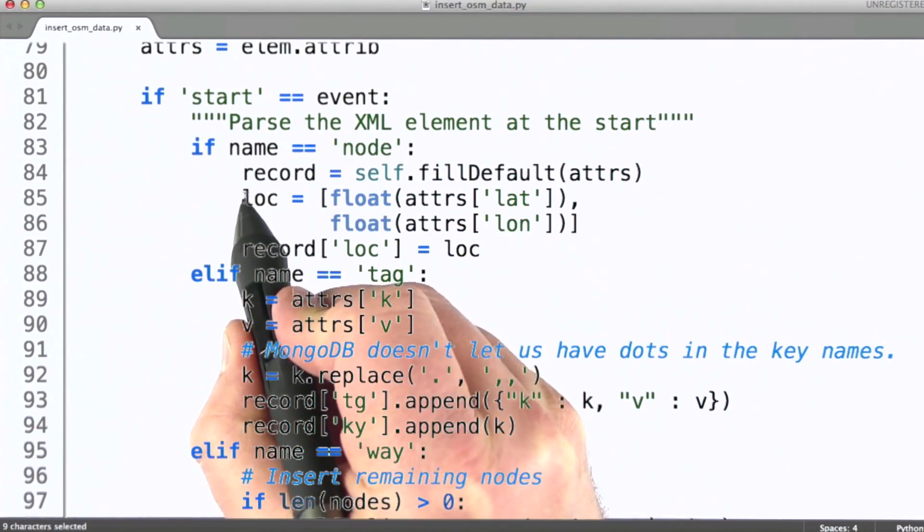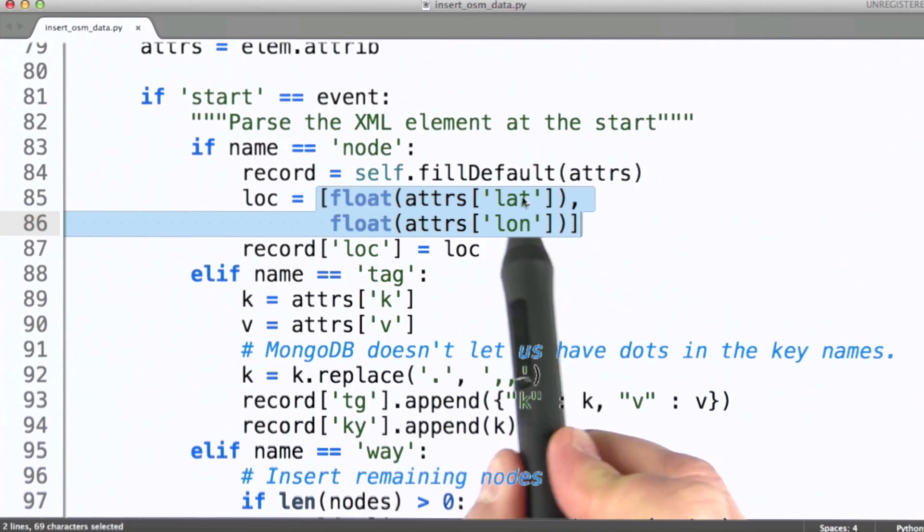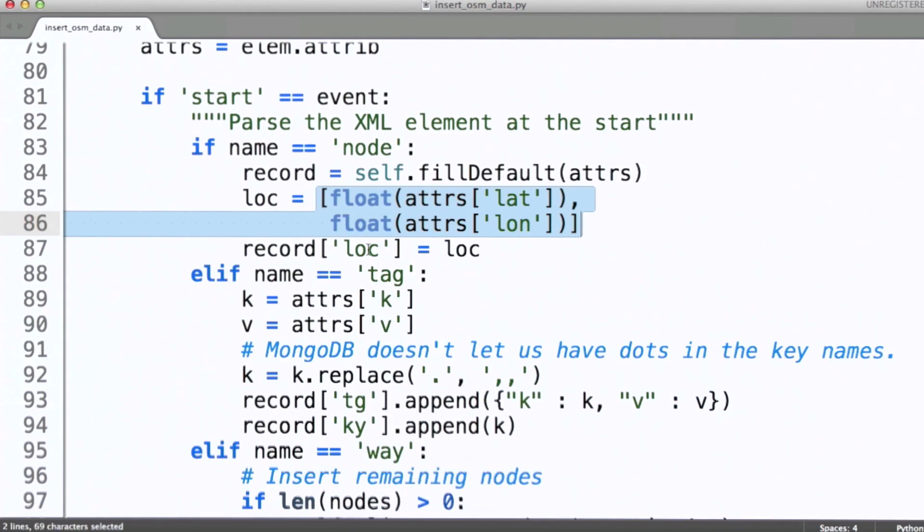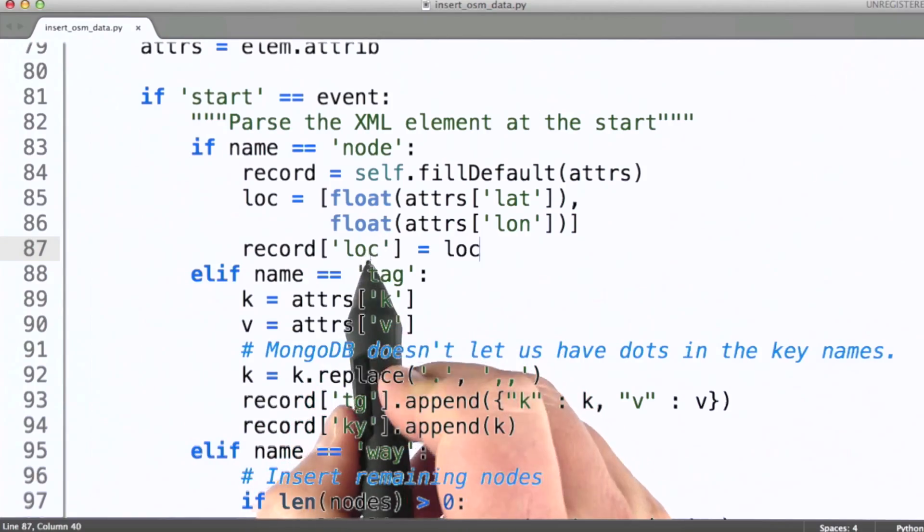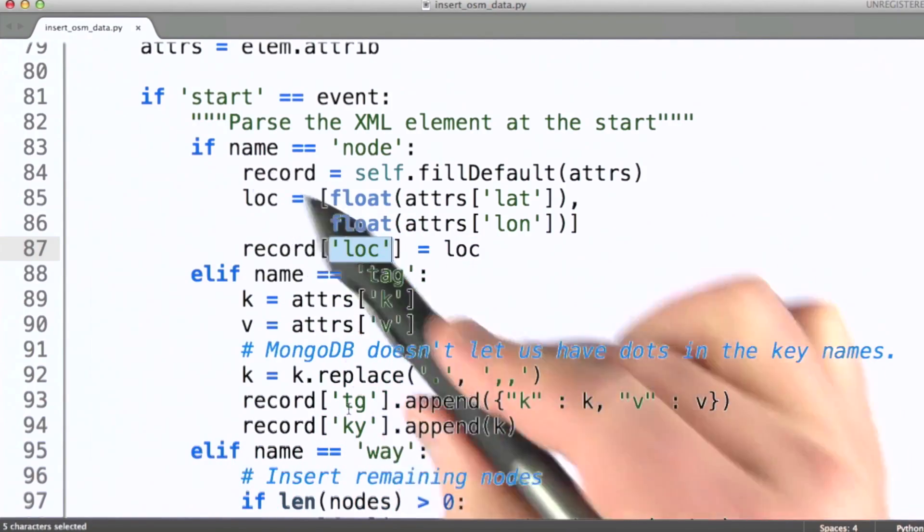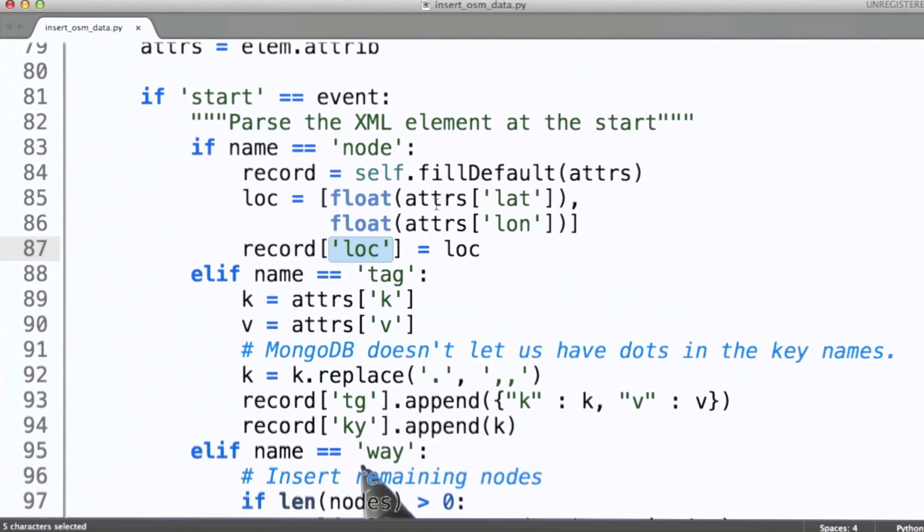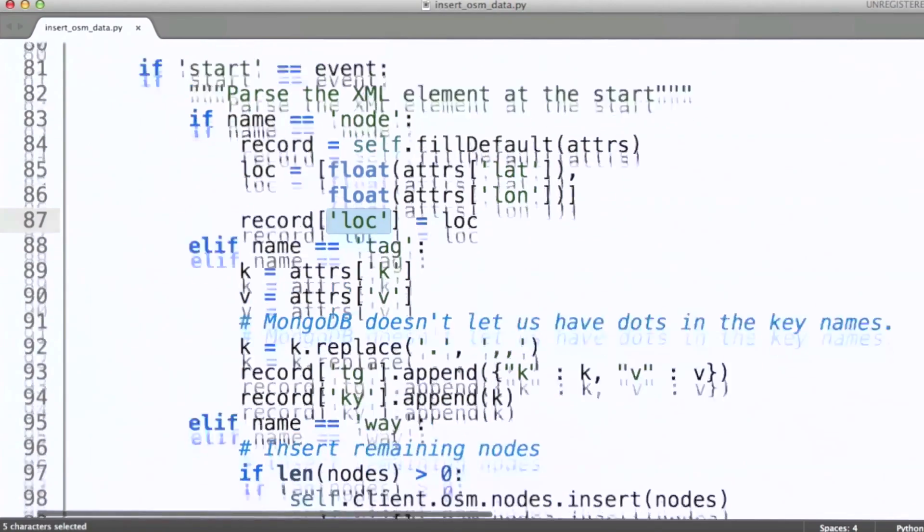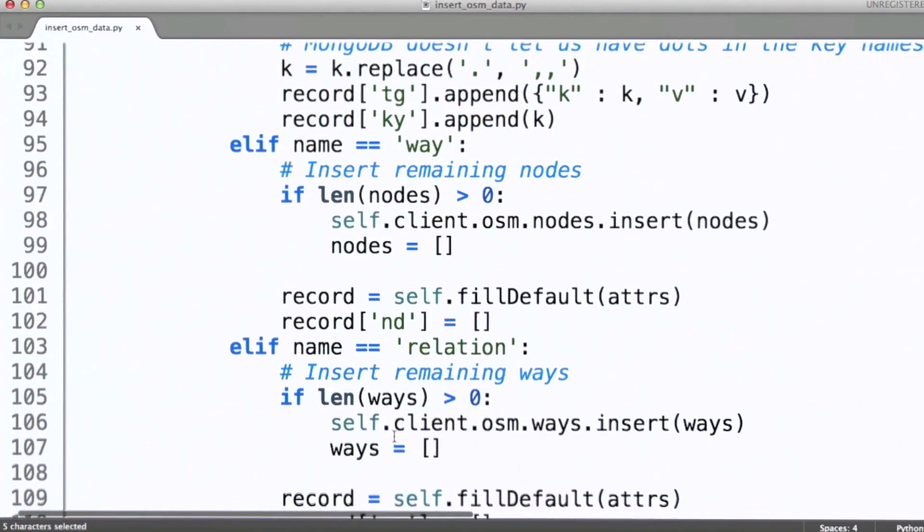For every node in this file, this script builds a value called loc and it is composed of the latitude value and the longitude value for a node element in the XML file. Then it adds that field to the record that it's building up as it moves through the node that it's creating a document for. And then finally it will end up creating a document in MongoDB by doing an insert at some point.